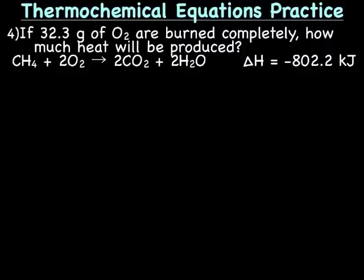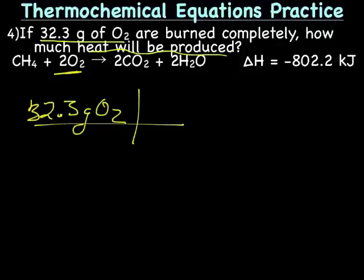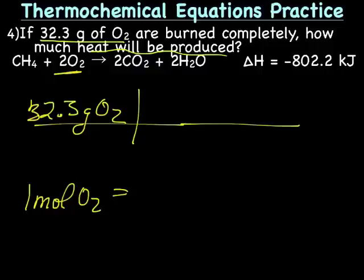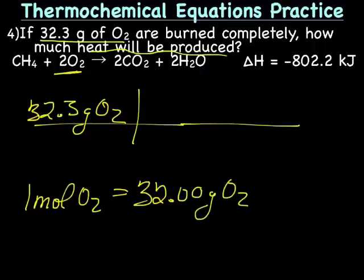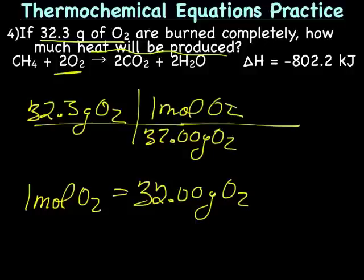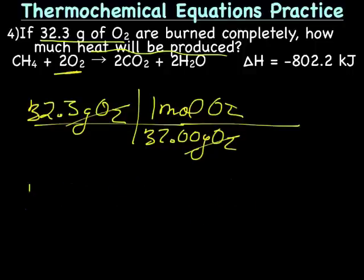Let's try a quick thermochemical equations practice problem. If we have 32.3 grams of O2, how much heat will be produced? The first thing you're going to have to do is convert grams of O2 to moles of O2. So we have 32.3 grams of O2 over 1, using the equality one mole O2 equals the molar mass of O2, which is 32.00 grams of O2.